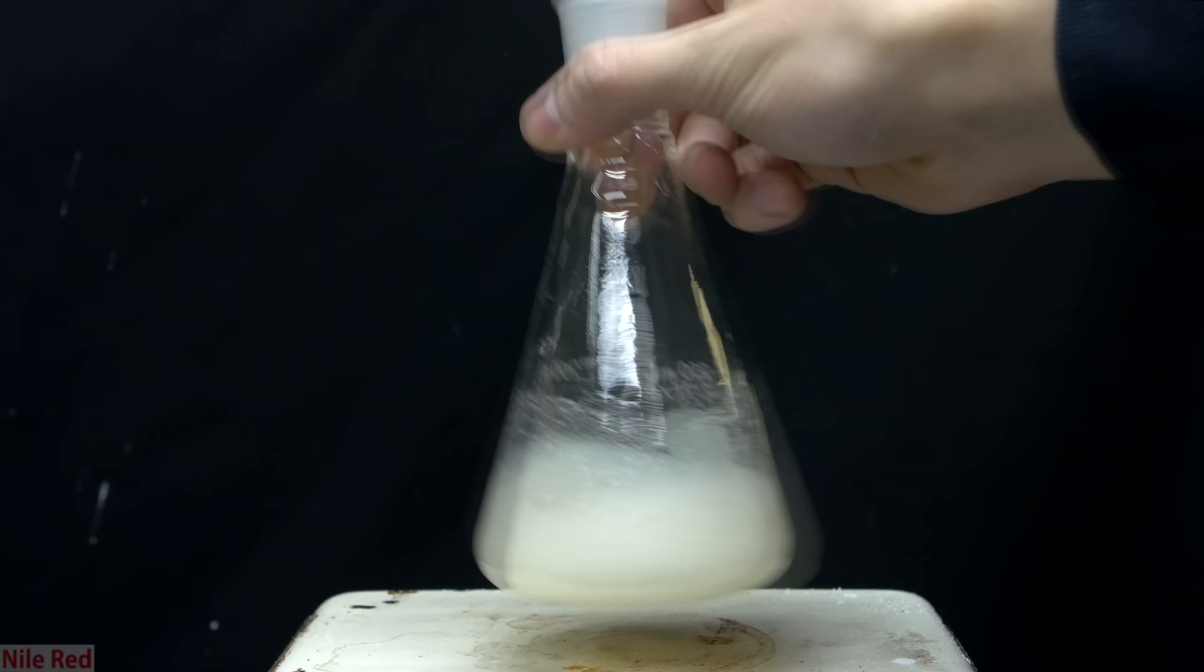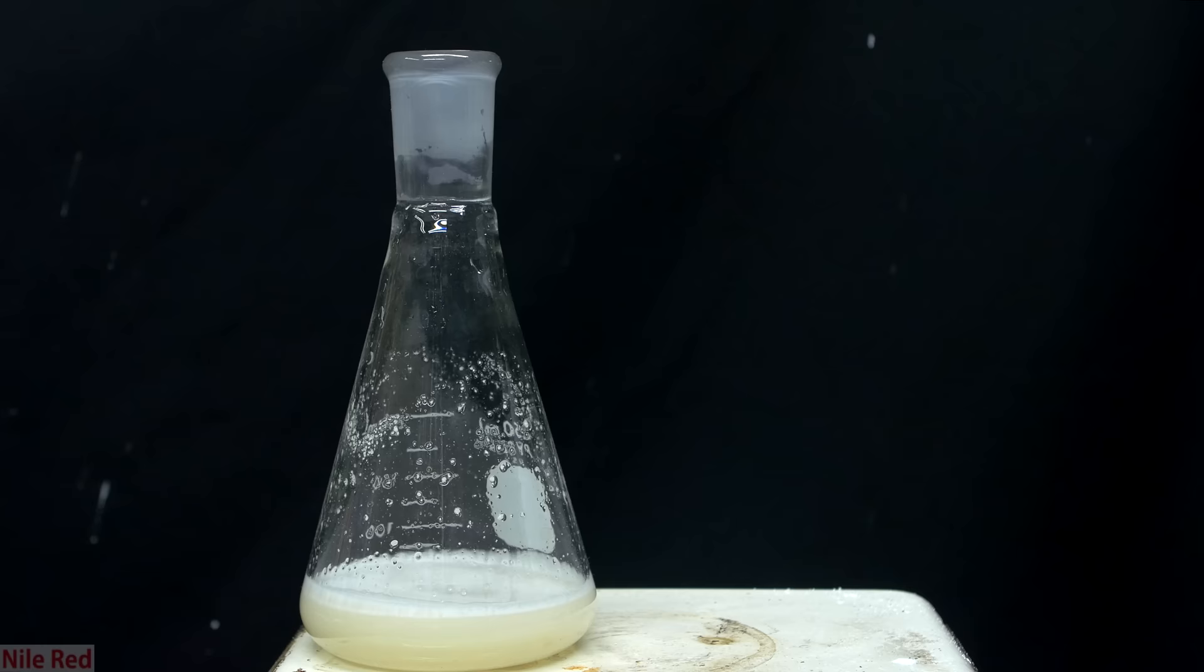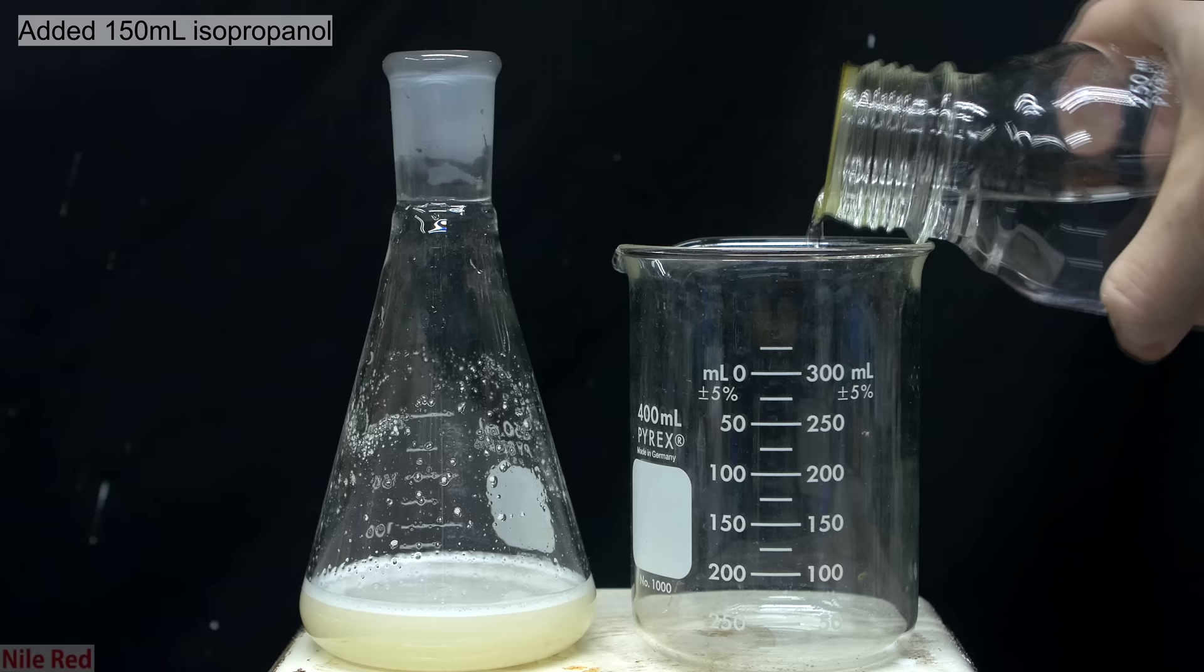We just need to mix it around as best we can, and then place it down for the solids to settle out on the bottom. While we're waiting for things to settle out, I move the Erlenmeyer to the side, and I place a beaker next to it. Into this beaker, I poured in about 150 milliliters of our 99% isopropanol.